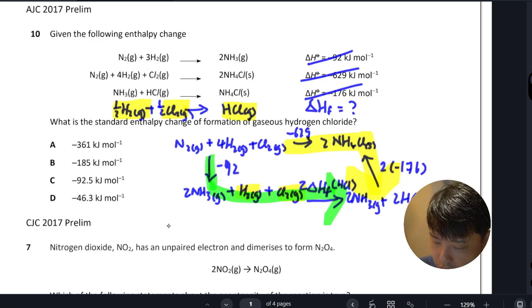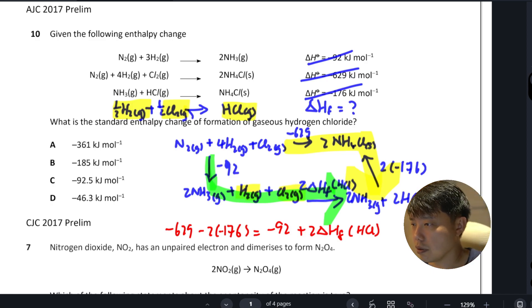And do the calculation like this: minus 629 minus 316 plus two times the H formation HCl, right? So if you go and do that calculation, you end up negative 92.5, which is C.